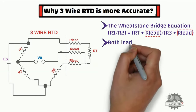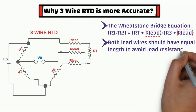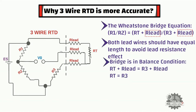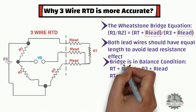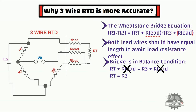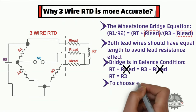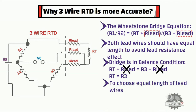However, both lead wires should have equal lengths to avoid any lead resistance effect in the circuit. As you can see, this is the equation when the Wheatstone bridge is in balance condition. In this equation, lead resistance cancels out with the help of the third lead wire, and this is the reason that temperature measurement does not get affected by lead resistance. However, great care needs to be taken to choose equal lengths of lead wires — if you do not choose equal length lead wires, temperature measurement error will occur.